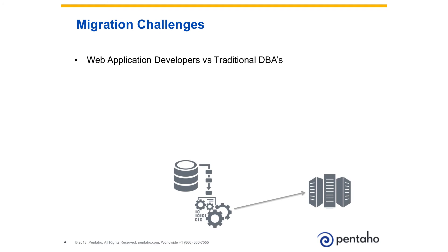Some of the challenges faced by companies migrating data from legacy applications into their new MongoDB apps include the fact that MongoDB application developers think differently about data. They tend to think about data as objects, while traditional database administrators tend to think about data as entities and relationships. The languages we use with MongoDB are significantly different than how we work with relational databases, often leaving traditional DBAs scrambling to help with the migration process. And once learned, writing JSON queries to perform inserts, updates, and upserts is still time-consuming, difficult to troubleshoot, and tedious to maintain.